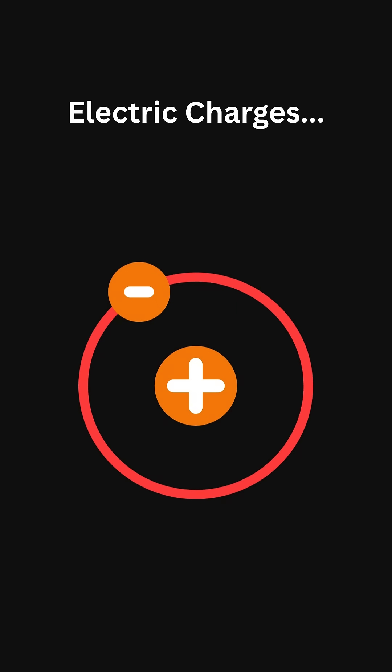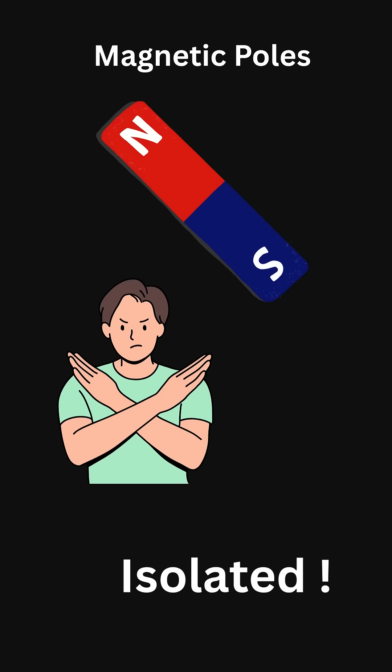Unlike electric charges, which can exist alone, positive or negative, magnetic poles cannot be isolated.